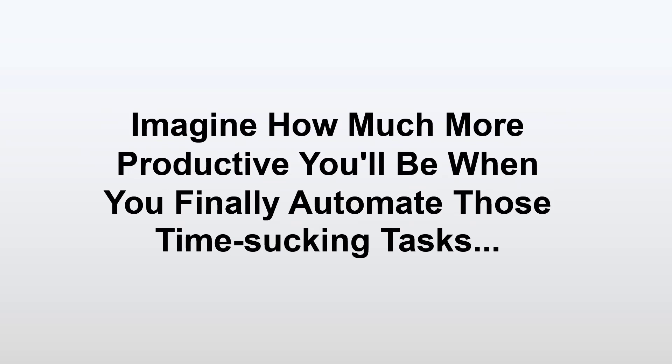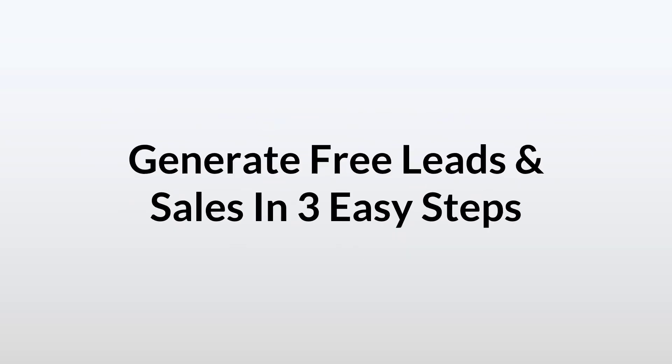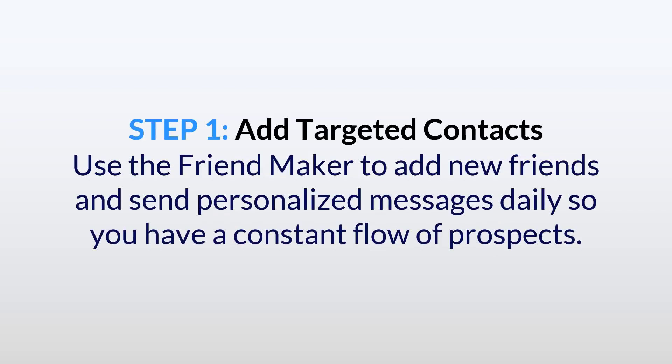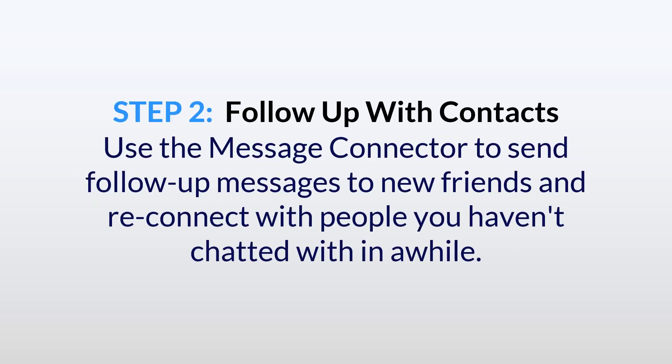Imagine how much more productive you'll be when you finally automate those time-sucking tasks. Here's how to generate free leads and sales in three easy steps. Step 1: add targeted contacts. Use the Friend Maker to add new friends and send personalized messages so you have a constant flow of prospects. Step 2: follow up with contacts. Use the Message Connector to send follow-up messages to new friends and reconnect with people you added a while ago.